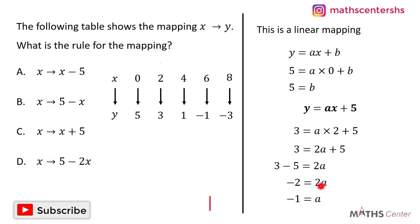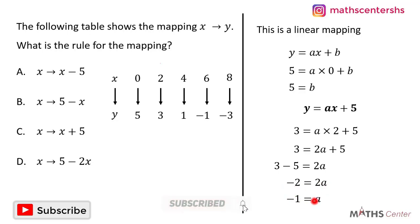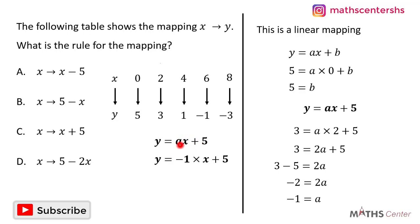Dividing both sides by 2 to find a: negative 2 divided by 2 gives us negative 1, so a is equal to negative 1. We had y is equal to ax plus 5, and now that a is negative 1, we replace a to get y is equal to negative 1 times x plus 5. Negative 1 times x gives us negative x, so y is equal to negative x plus 5.